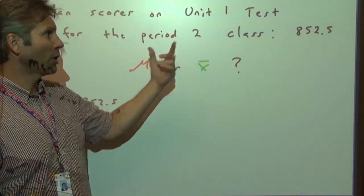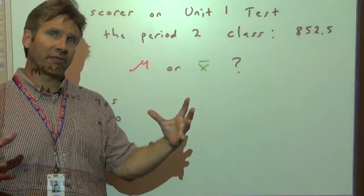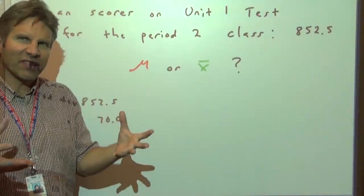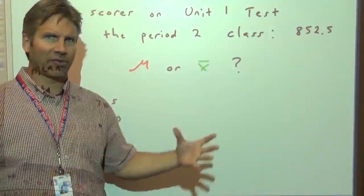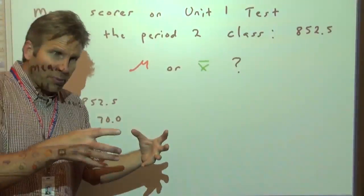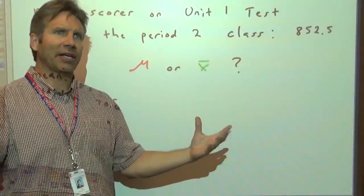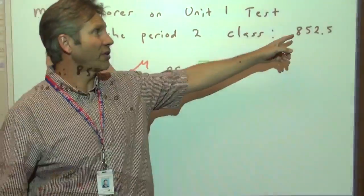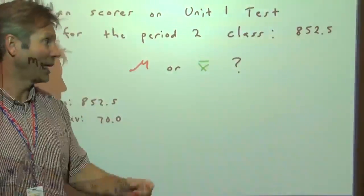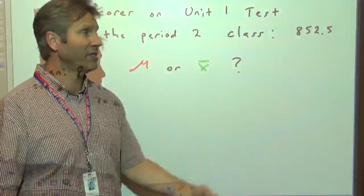But if instead, if we take this one class out of the eight classes of AP stat, then that's a sample. It's not a very good sample because it's not a cross section, but it would just be a subset of the entire population. So now we would consider that mean average to be a sample mean. So now it would be x bar, it would be a statistic.